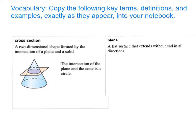Copy the following key terms, definitions, and examples exactly as they appear into your notebook. A cross-section is a two-dimensional shape formed by the intersection of a plane and a solid. The intersection of a plane and the cone is a circle.